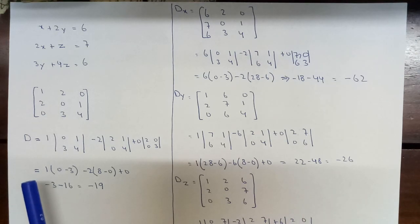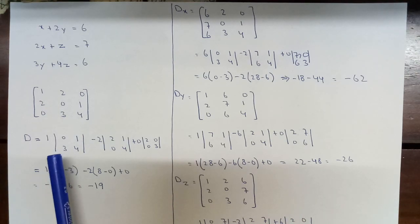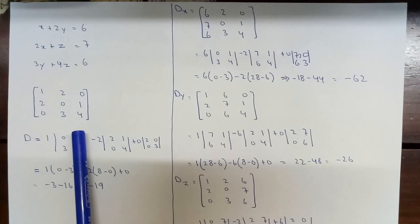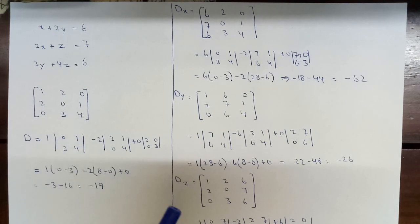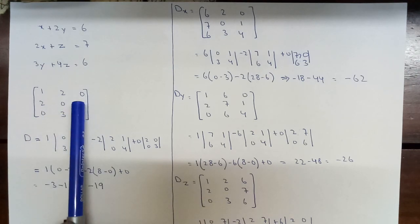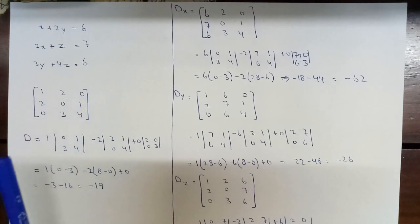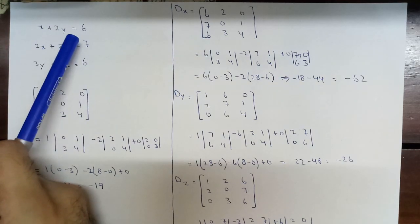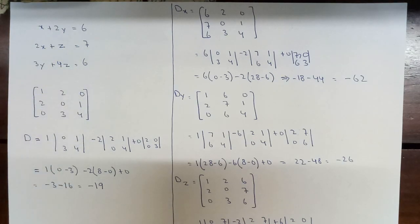In the same way, now we come to the determinant of z. Dz uses the matrix with columns 1, 2, 0; 2, 0, 3; and we replace the third column with 6, 7, and 6. We then find its determinant.